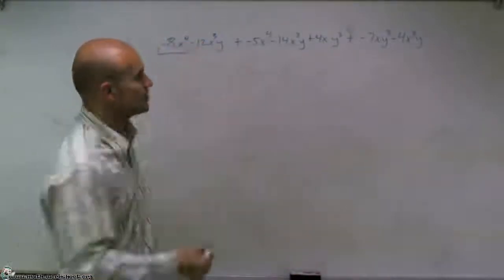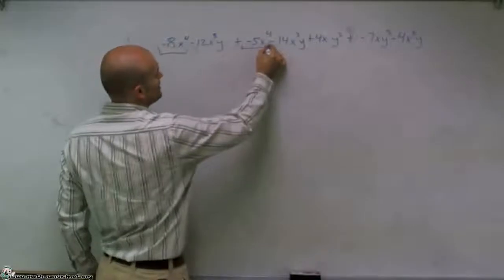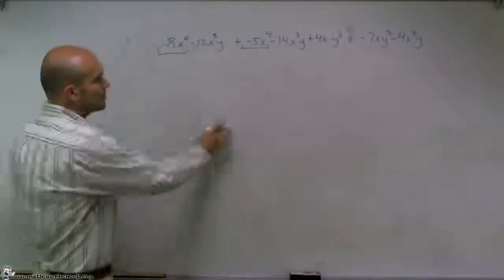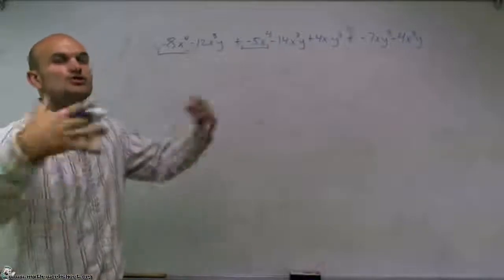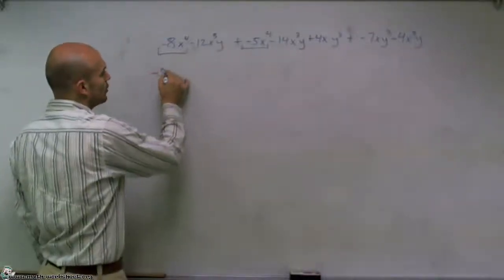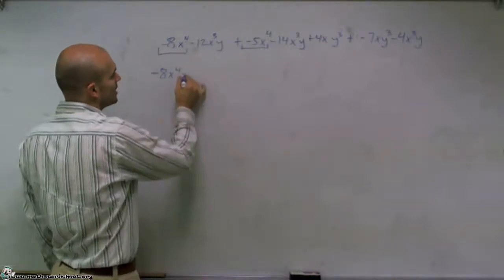So looking at all my terms, the only term that I see I can combine that to is negative 5x to the fourth. So what I'm going to do for this problem is, just to show you again, I'm going to rewrite this whole polynomial with terms that I can combine.